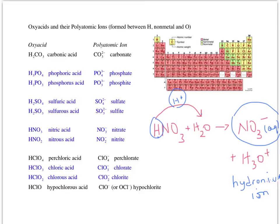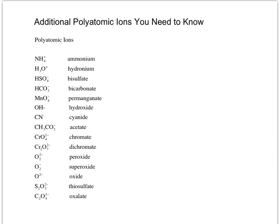Also watch for halogen variants: HBrO₃ would be bromic acid and BrO₃⁻ would be bromate, and so on with the halogens. In addition to those polyatomic ions, here are more that you need to know. Not too many positive ones; most are negatives.